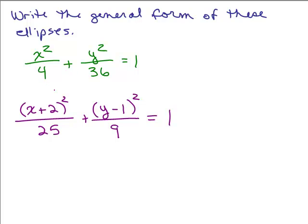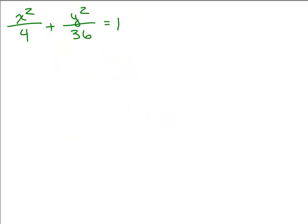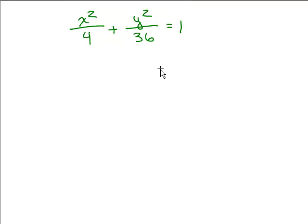So let's do it for these two problems. So the first one, x² / 4 + y² / 36 = 1. Let's just move this in the center. To get rid of these fractions, I could multiply both sides by the least common denominator.